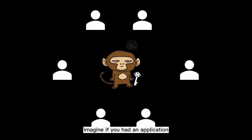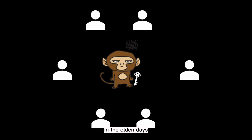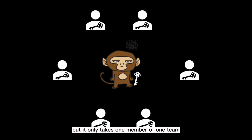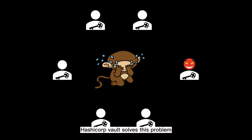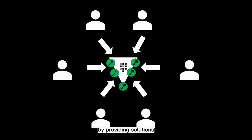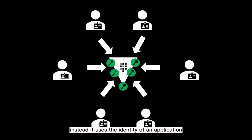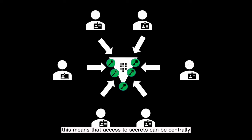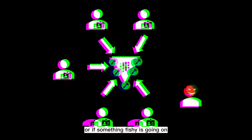Common sense. But in practice, this is easier said than done. Imagine if you had an application that needs to be accessed by 6 other applications. In the olden days, you would need to distribute the secrets to those 6 application teams. But it only takes one member of one team to accidentally misplace or misuse the key to cause a breach. HashiCorp Vault solves this problem by providing solutions that don't require secrets to be distributed. Instead, it uses the identity of an application to determine what secret it has access to. This means that access to secrets can be centrally managed and easily revoked when no longer required or if something fishy is going on.